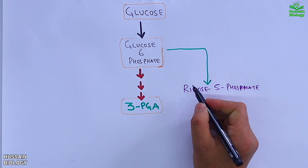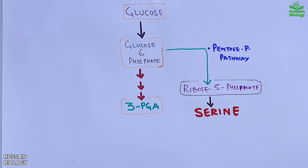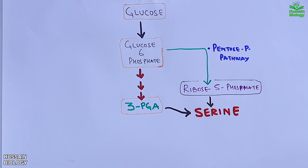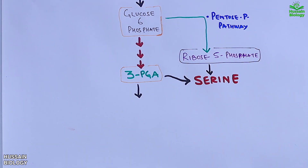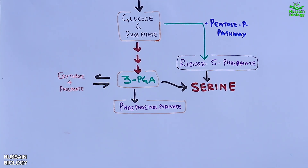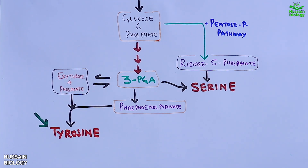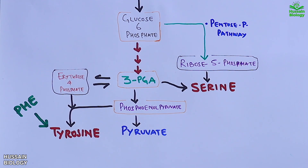As shown in the diagram, ribose-5-phosphate gives rise to serine. On the other hand, 3-PGA can also mediate the synthesis of serine. The 3-PGA is further converted into phosphoenolpyruvate (PEP) and erythrose-4-phosphate, both of which mediate the synthesis of tyrosine from phenylalanine.